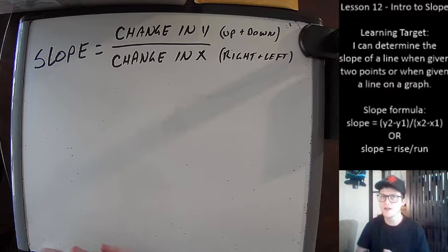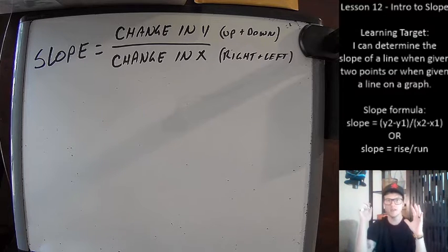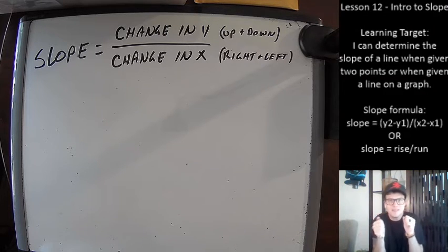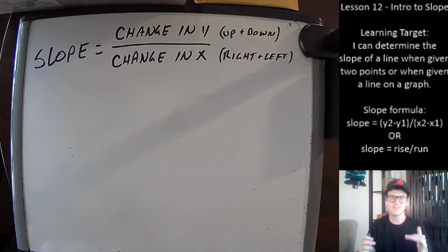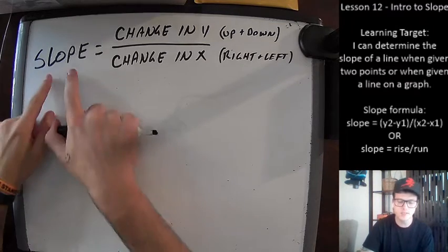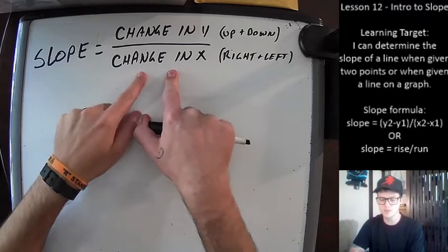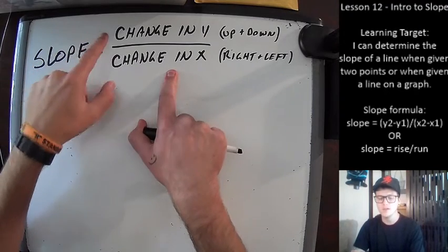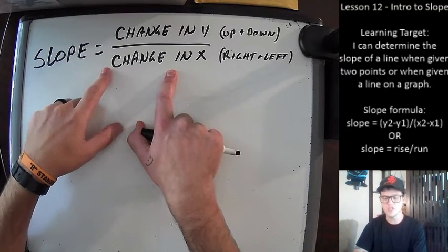Oftentimes we see a slope represented as a fraction. I know it's our favorite f-word, and normally fractions make us tense up a little bit. This one shouldn't be so bad — in fact there are designated areas for where different pieces of information go. The slope of the line is often represented as a fraction where the change in the y value is divided by the change in the x value.